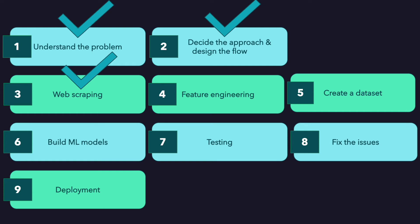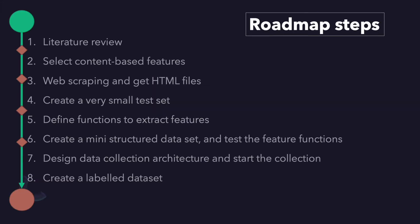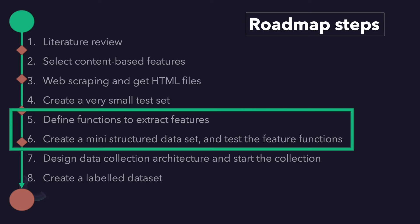Hello everyone. We learned how to script the HTML content of a website and created a mini-dataset for the future engineering part. Now we will define functions one by one and we will use the BeautifulSoup model. We will complete step 5 and step 6 in our roadmap.